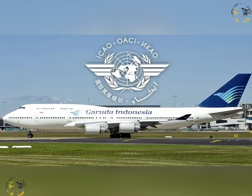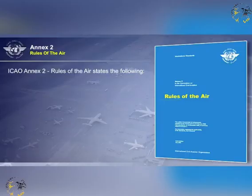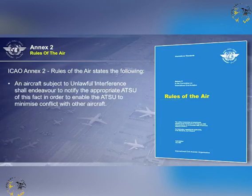The content of other ICAO Annexes and documents relate directly to security, and you should be familiar with them. The first is ICAO Annex 2, Rules of the Air, which states the following: an aircraft subject to unlawful interference shall endeavour to notify the appropriate air traffic service unit of this fact, in order to enable the air traffic service unit to minimise conflict with other aircraft.